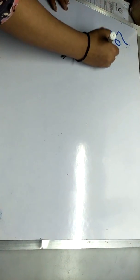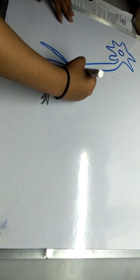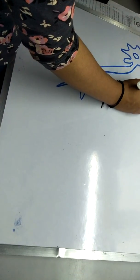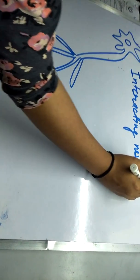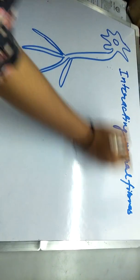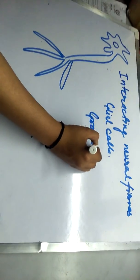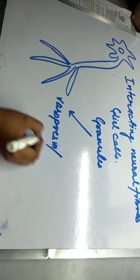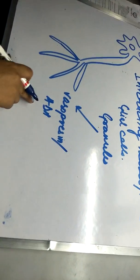In the posterior lobe of the pituitary, there are direct neural connections. It contains interacting neural fibers, glial cells, and granules. One of the granules secretes vasopressin, also known as ADH.